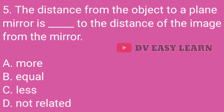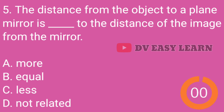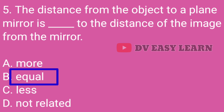Question No. 5: The distance from the object to a plane mirror is dash to the distance of the image from the mirror. Correct answer: Equal.